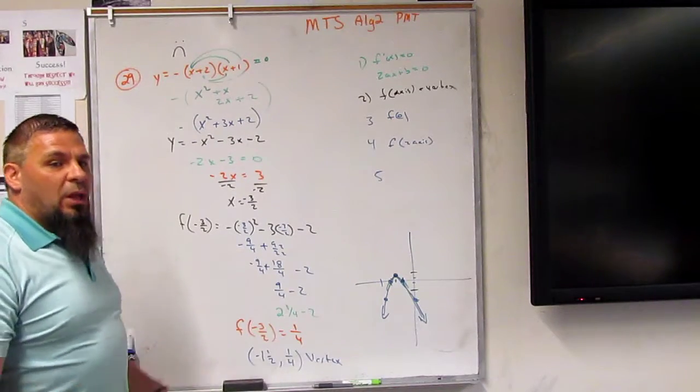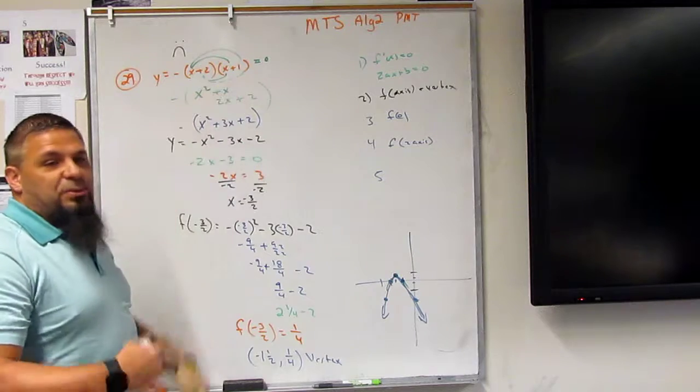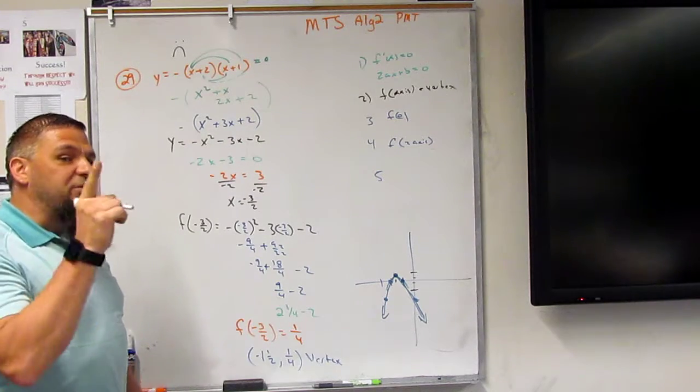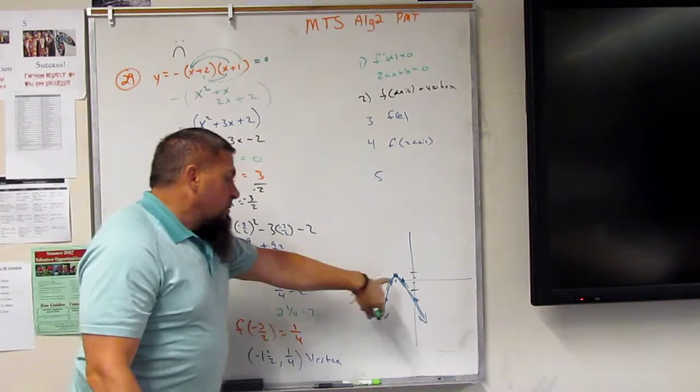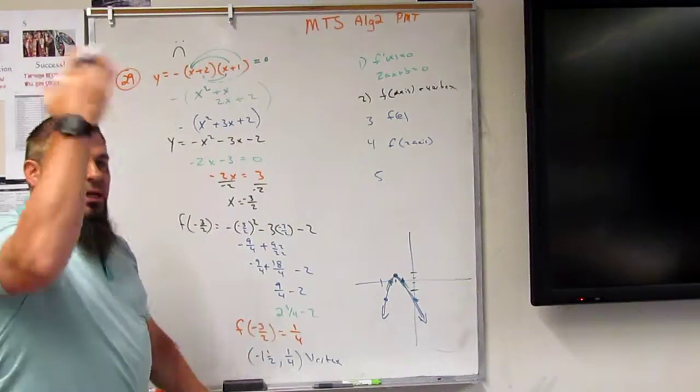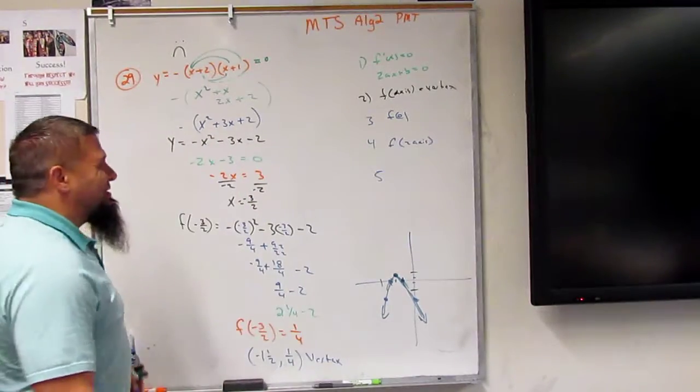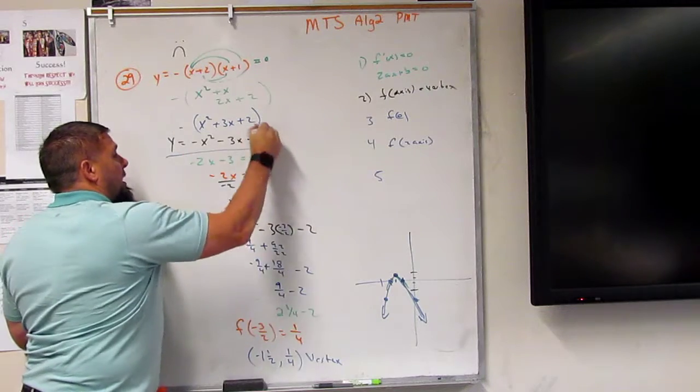And solve for 0, right? So if they give you this already factored out, it's pretty easy to graph once you find the axis of symmetry and the vertex. So no matter what, you still have to do this stuff.